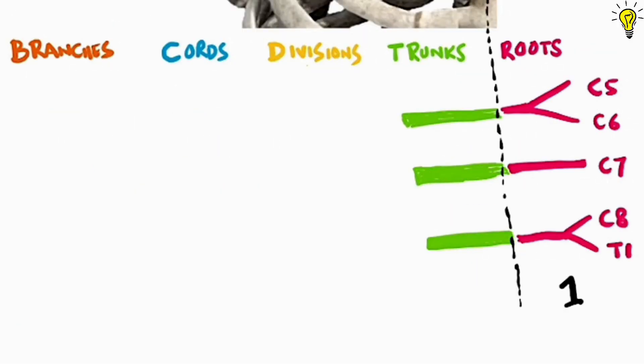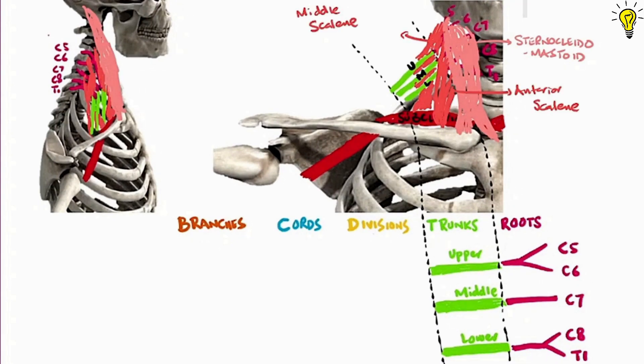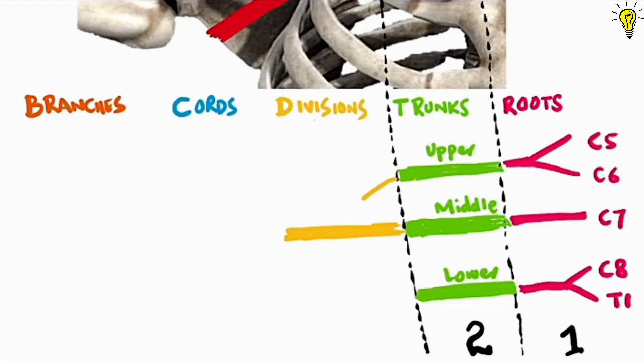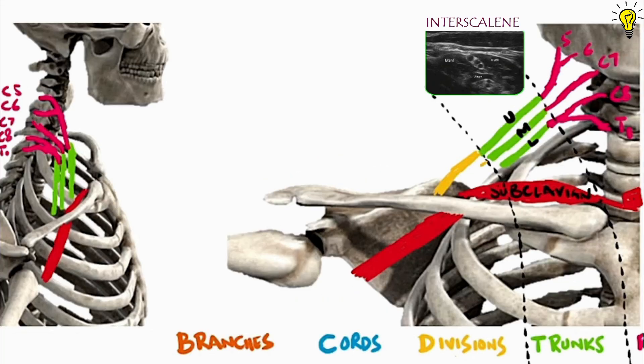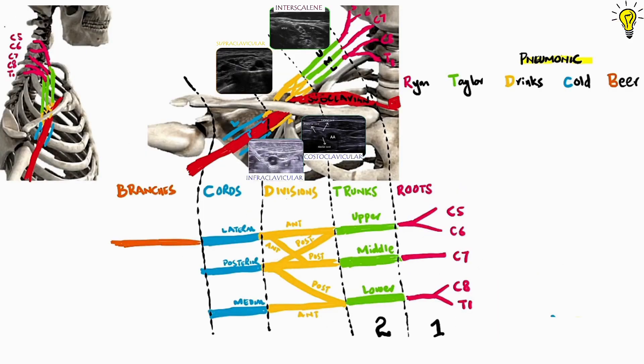Brachial plexus is one of the most essential yet volatile subjects to remember both as medical students and anesthetists. But if we try to systematically relate it in 3D fashion with anatomy and radio images, the memory stays forever. Let's do that.